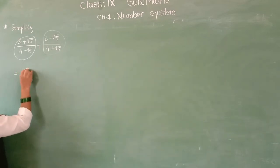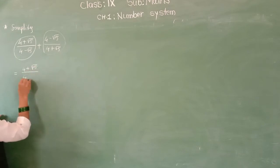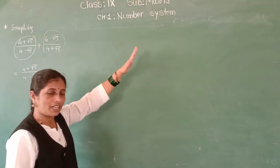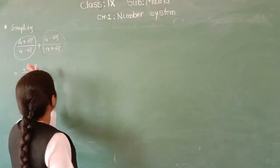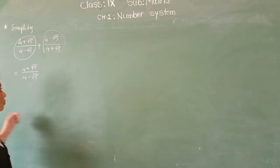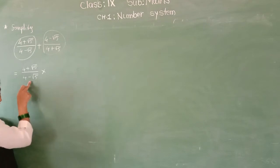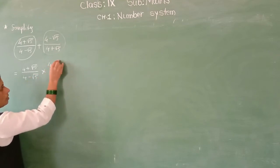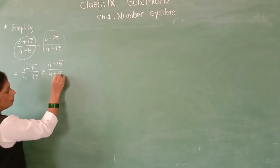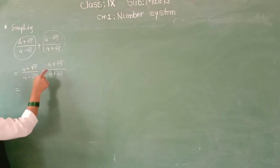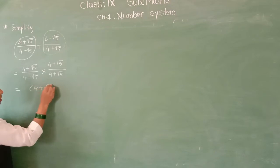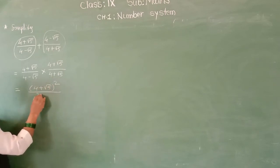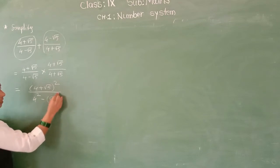So 4 plus root 5 upon 4 minus root 5 — we can solve these individually. So simply solve one by one. So for the first term, what is the rationalizing factor? 4 plus root 5. So 4 plus root 5 upon 4 minus root 5 multiplied by 4 plus root 5 upon 4 plus root 5. You will get 4 plus root 5 bracket square upon 4 squared minus root 5 squared.